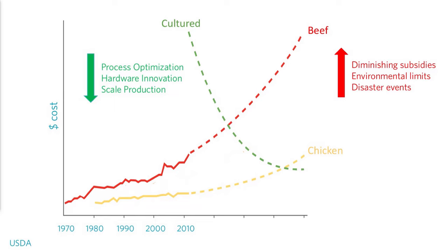You may wonder how that $300,000 price could ever come down. The price of conventional meat can only go up — animal agriculture today requires one-third of the planet's ice-free land, and as we try to raise more animals, prices will only increase. We'll also likely see diminishing subsidies and more disaster events causing price fluctuations. On the same token, cultured meat can only come down in price, because we'll figure out ways to optimize processes, develop more hardware, and scale production.